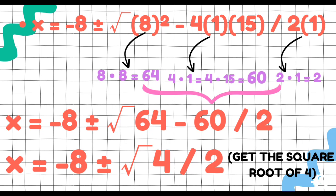Ngayon kunin naman natin ang equation niya. Unahin ang nasa radical. So 8 times 8 is 64. 4 times 1 is 4, times 15 is 60. Then 2 times 1 is 2. Kaya ngayon, magiging x equals negative 8 plus or minus radical 64 minus 60 over 2.